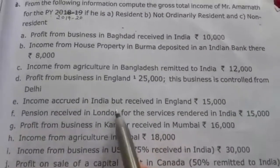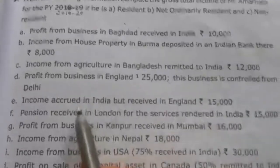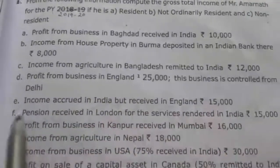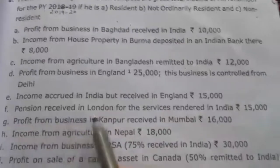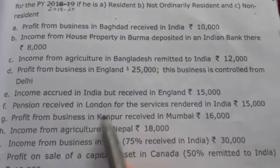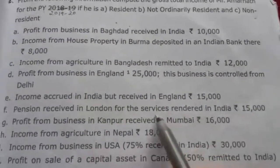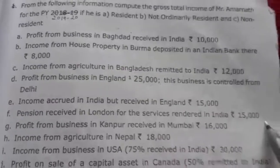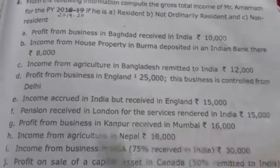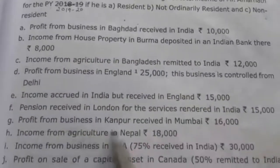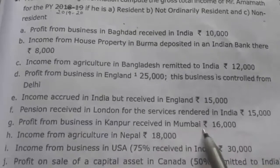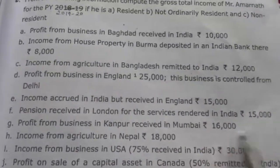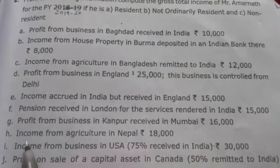Fifth, income accrued in India but received in England Rs. 15,000 — since it accrued in India, it is taxable in all three columns. Sixth, pension received in London for services rendered in India Rs. 15,000 — services rendered means income accrued in India, so taxable in all three cases. Seventh, profit from business in Kanpur received in Mumbai Rs. 16,000 — received in Mumbai, so taxable in all three cases.